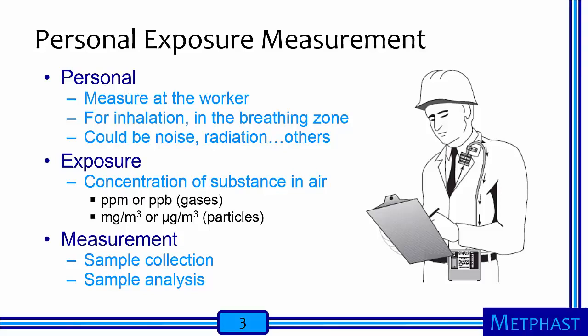Exposure has different meanings for different hazards. For inhalation, exposure means concentration of a substance in the air. For gases, we usually express exposure in parts of substance per million parts of air, ppm, or parts per billion, ppb — these are volume ratios. For particles, we usually express exposure as mass concentration: milligrams of particles per meter cubed of air or micrograms of particles per meter cubed of air.